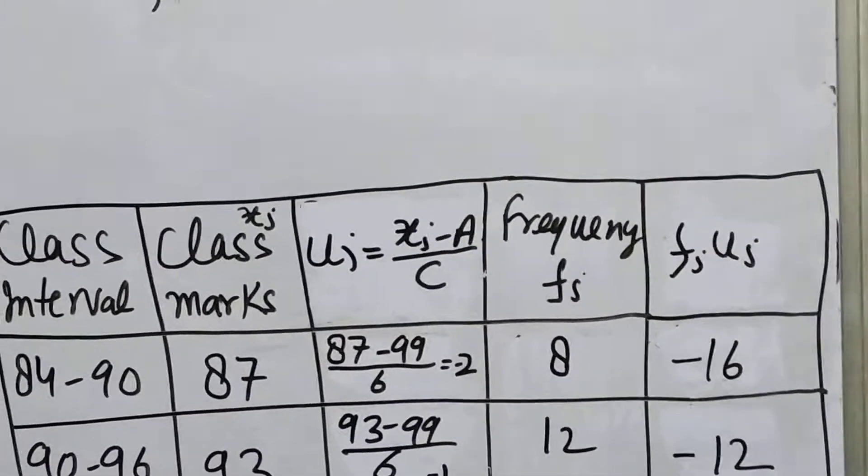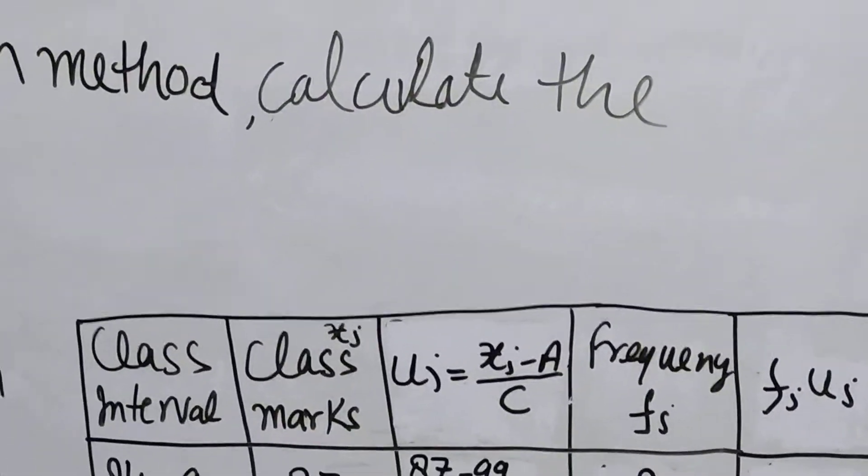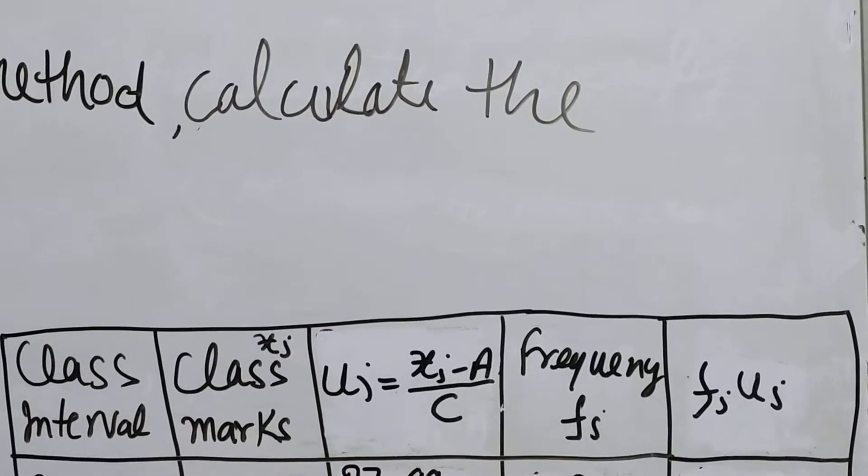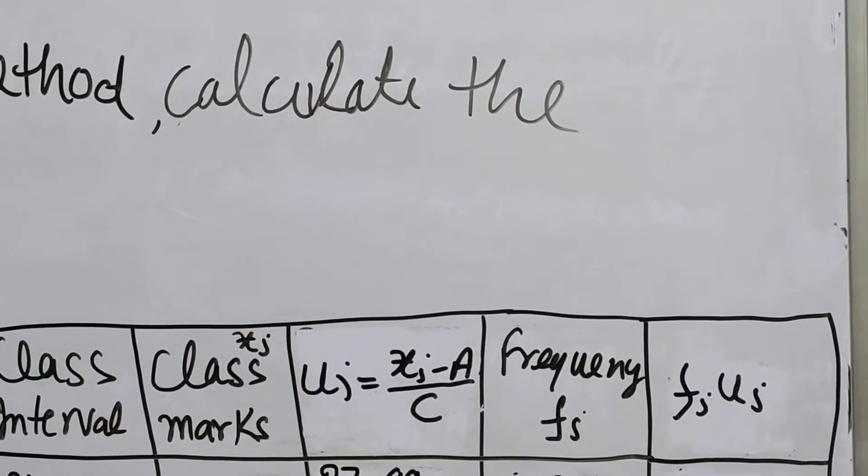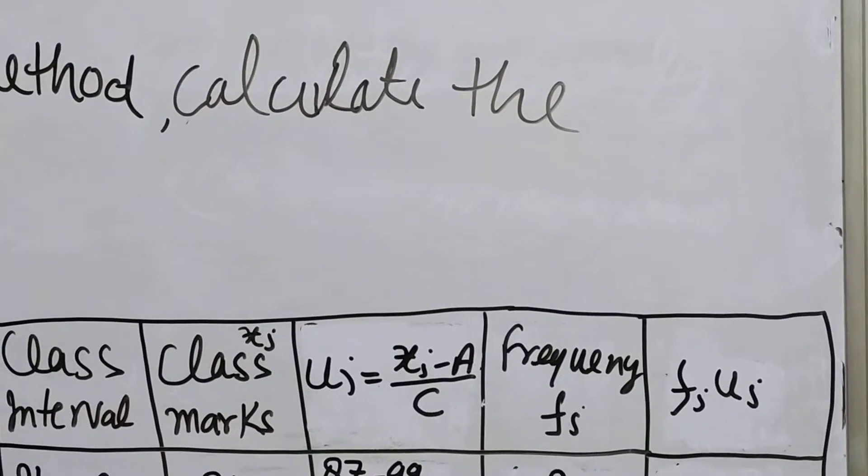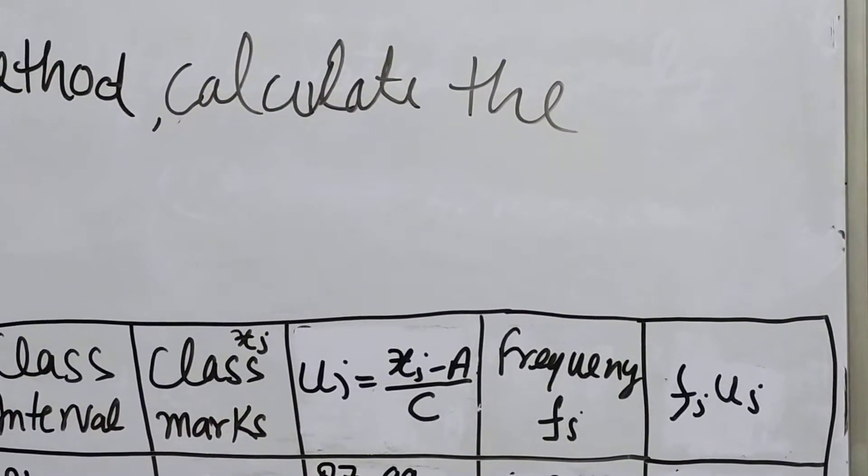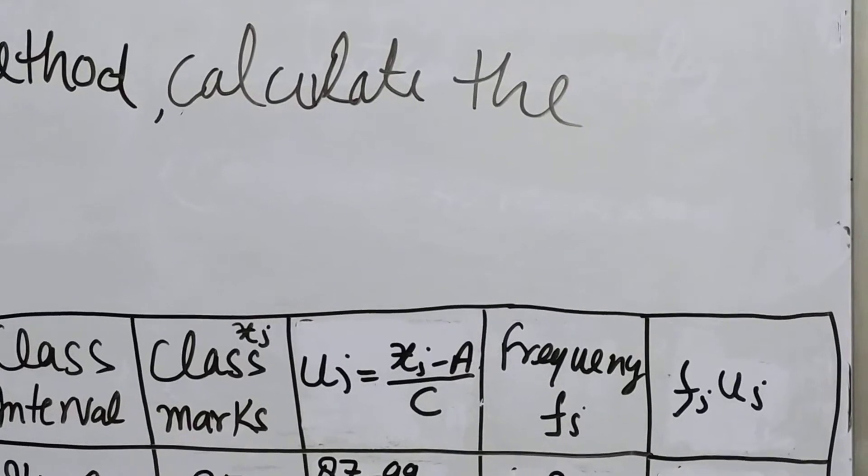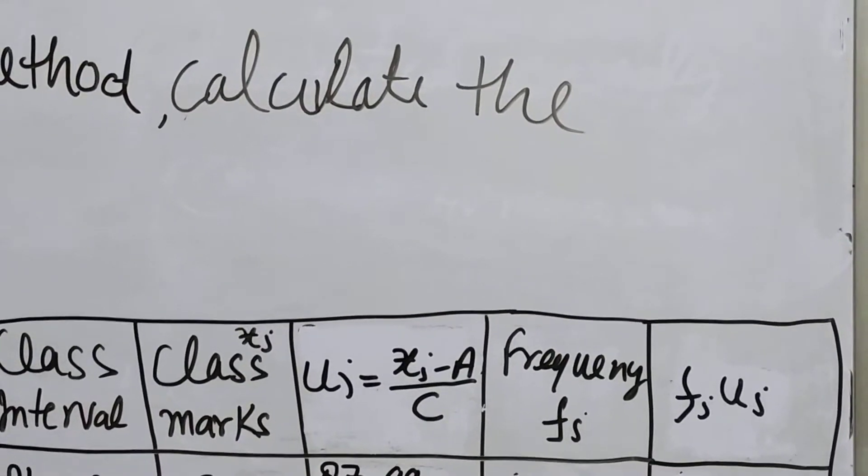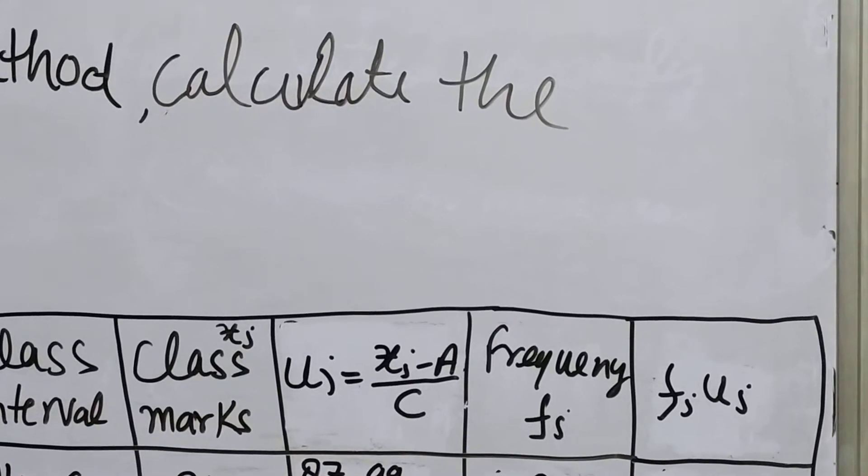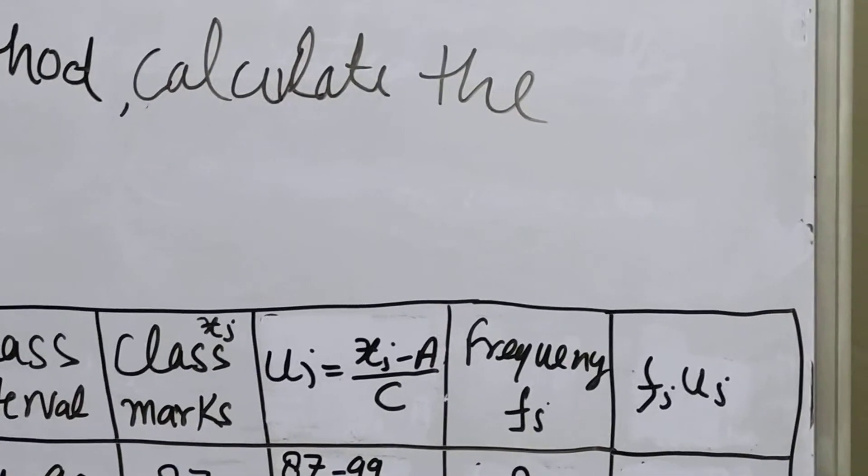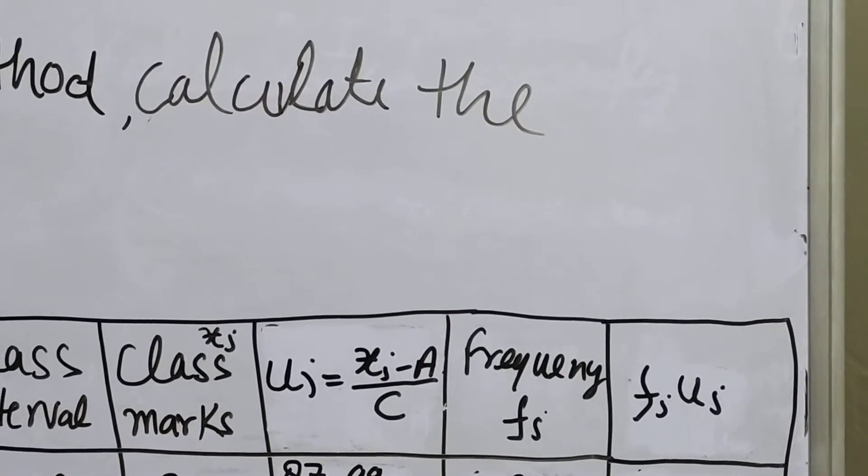How you have calculated, let's see. Here we have to draw a table containing five columns: in the first column class interval, then class marks xi, then ui which is xi minus A upon C, frequency as given, and fi ui.